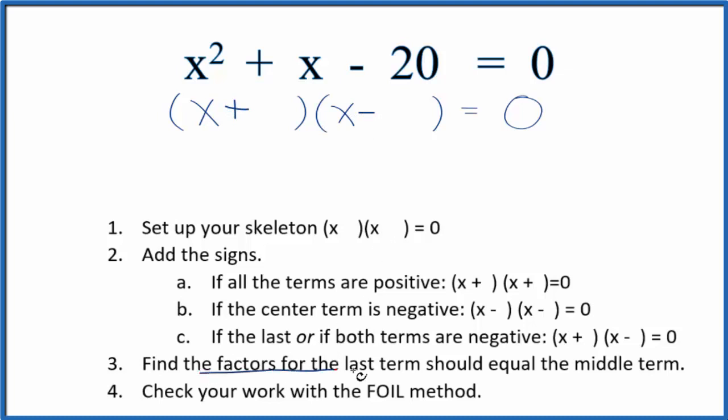Now we're going to find the factors for the last term, that -20. Those factors, when we add them up, should equal the middle term. There's a 1 here in front of the x, so those factors should add up to 1.